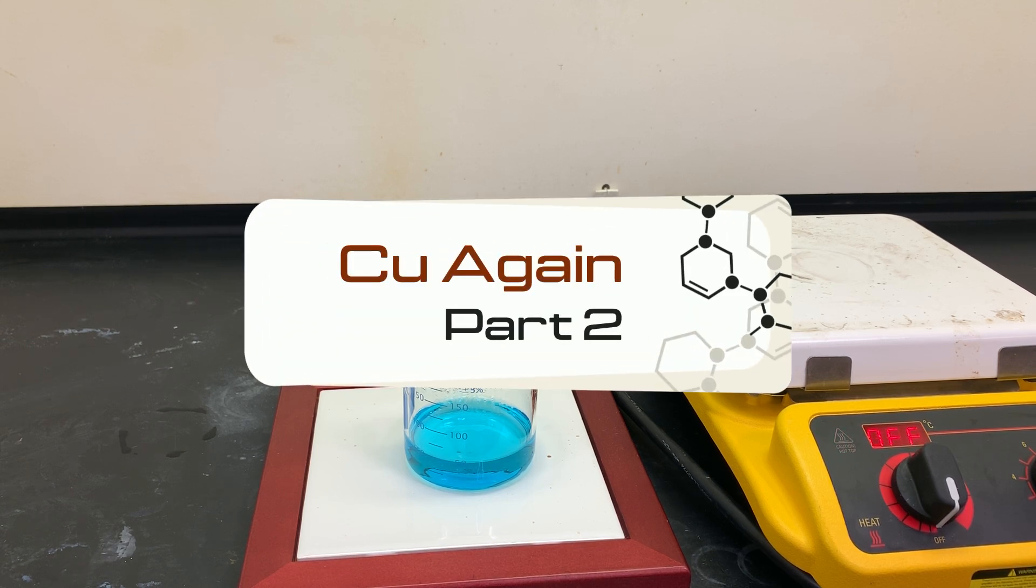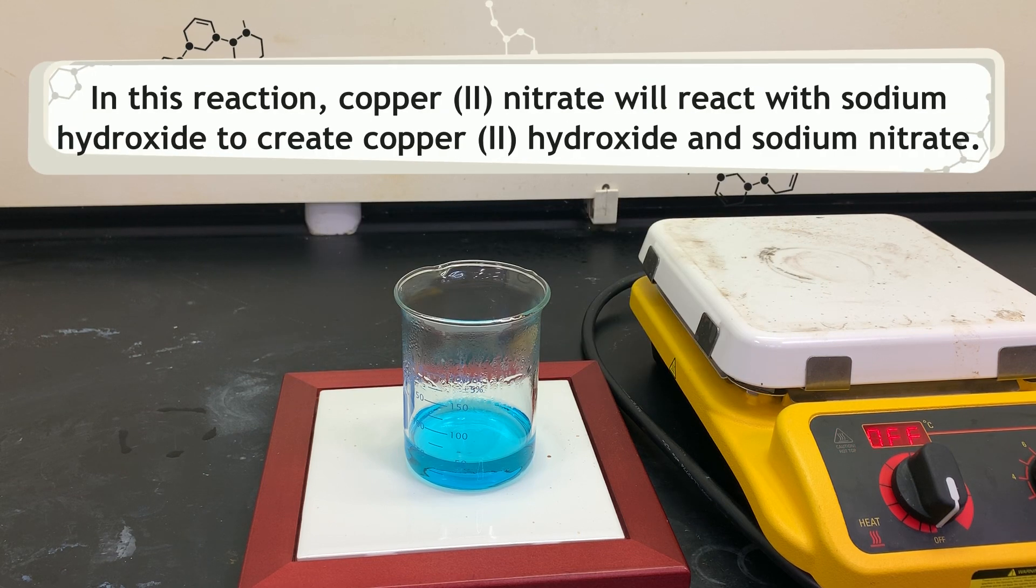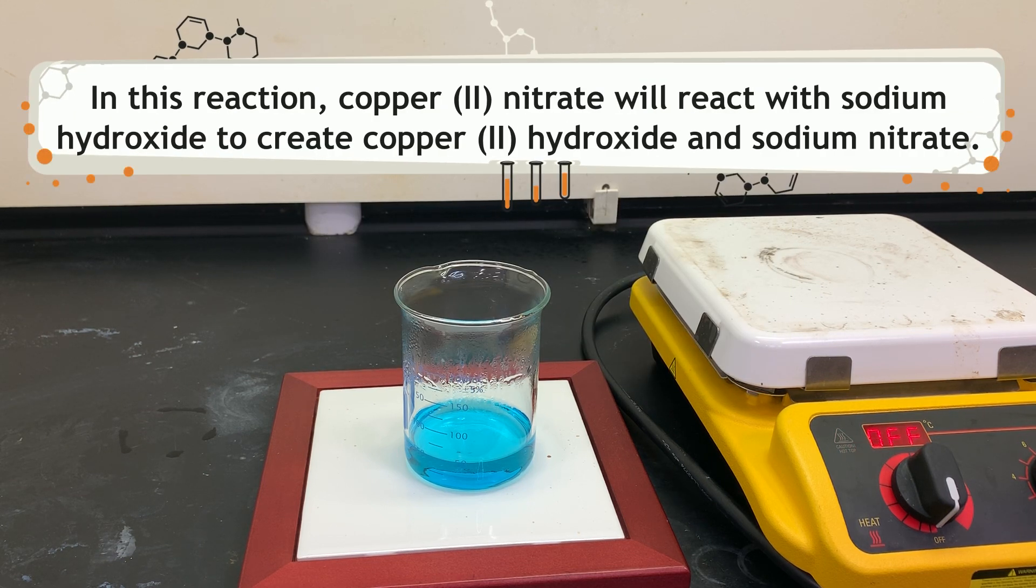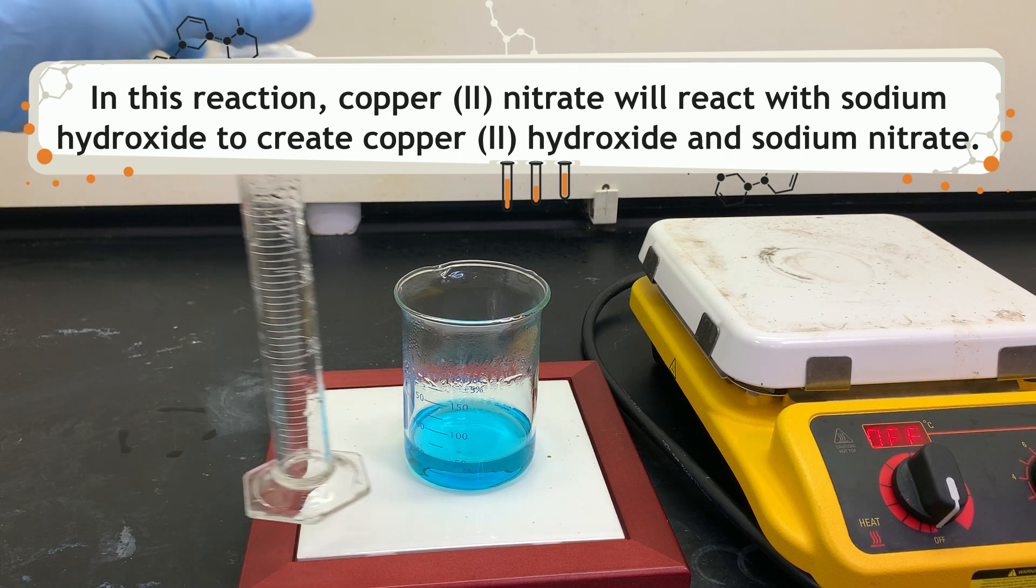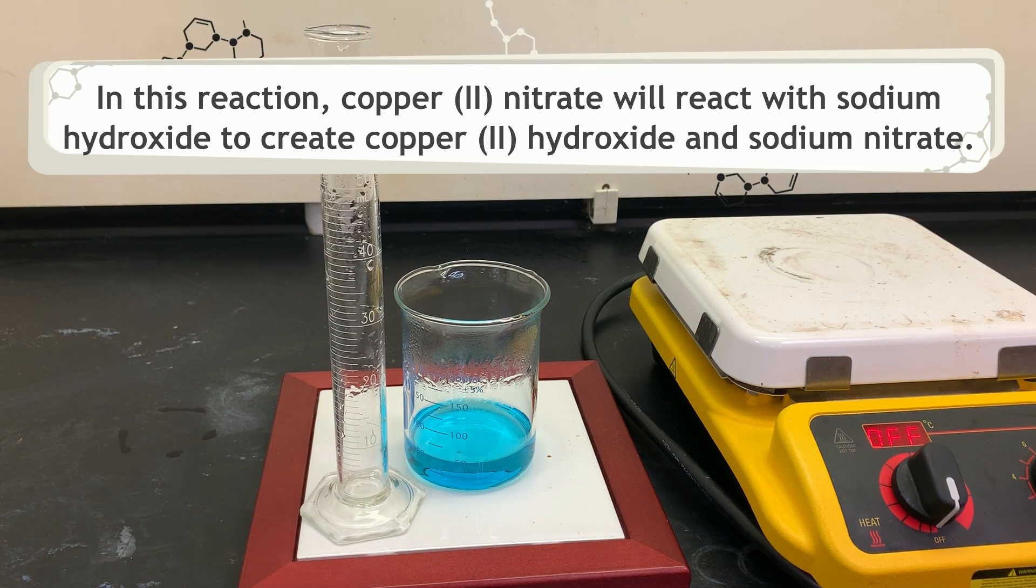Okay, this is part two of the reaction sequence. In this part, we are going to take the copper nitrate from the previous reaction and react it with sodium hydroxide to create copper hydroxide and sodium nitrate.